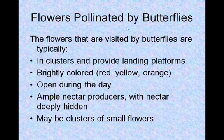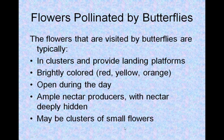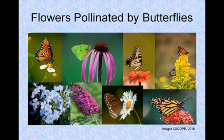Flowers pollinated by butterflies. The flowers that are visited by butterflies are typically in clusters and provide landing platforms. Brightly colored, like red, yellow, and orange. Open during the day. Ample nectar producers, with nectar deeply hidden, and may be clusters of small flowers. These are some examples of flowers pollinated by butterflies.